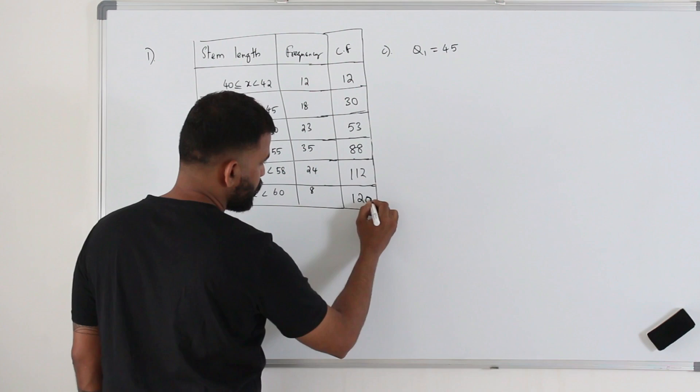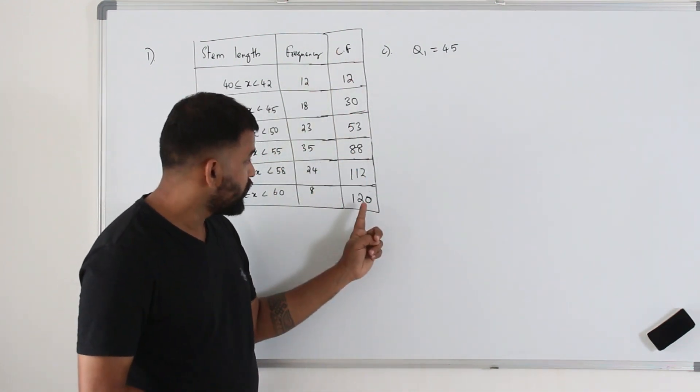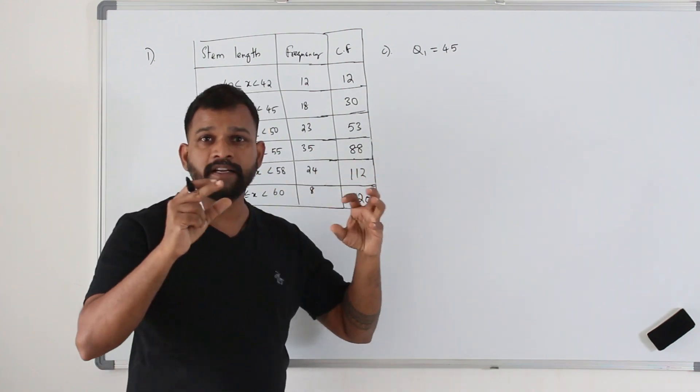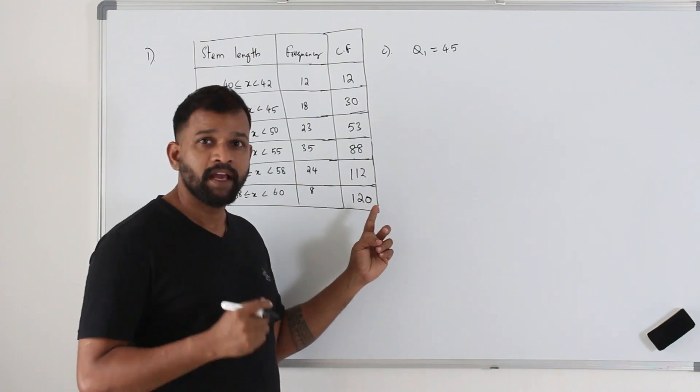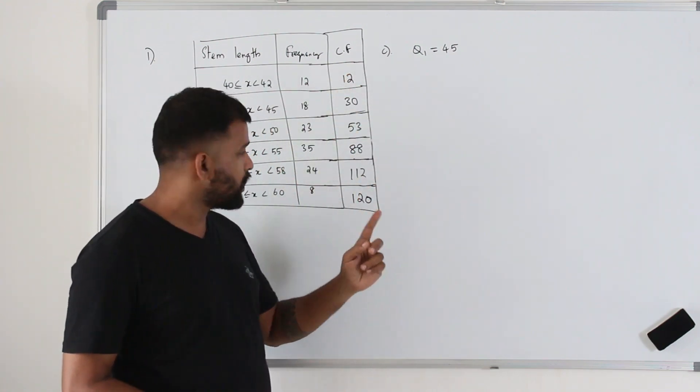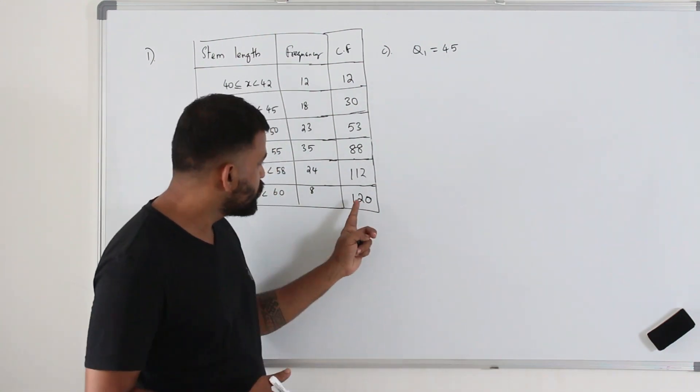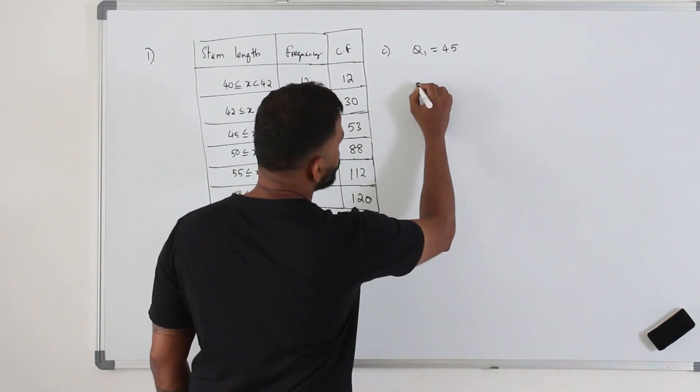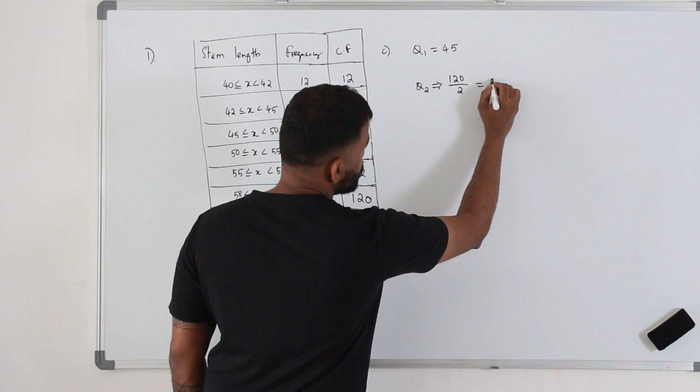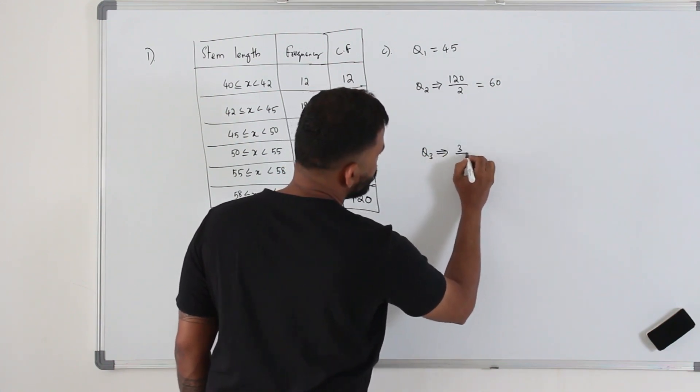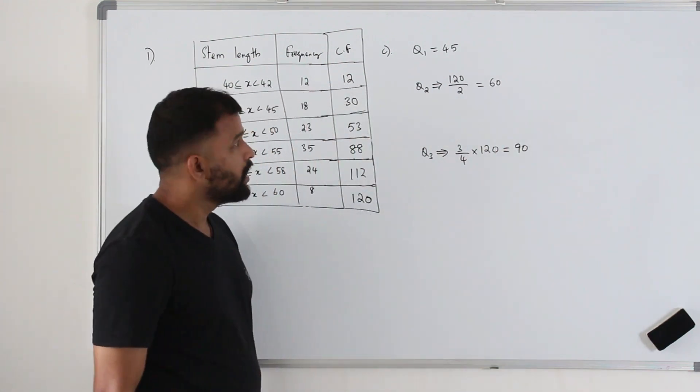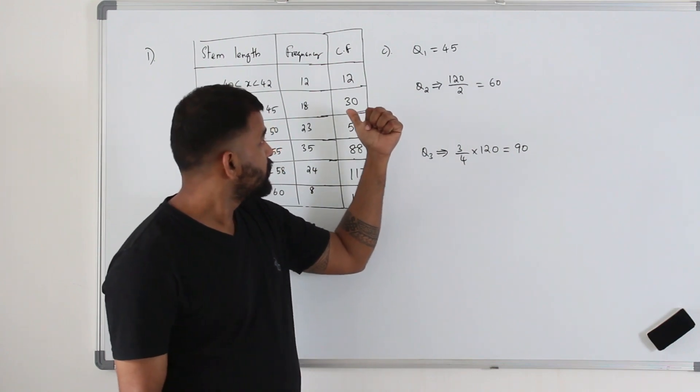Once you got the cumulative frequency, the first thing you need to do, look at the last figure. This should be equal to sigma F, or usually they will mention in the question there are 122 samples tested. So just read the question. If the question says 122, you got 120 here. That means you have made a mistake adding these figures. Just to check. So the question mentioned 122. This should be equal to 122. Now to find Q2, you take sigma F, which is same as the last figure, divide by 2, which is 61. To find Q3 upper quartile, 3/4 of sigma F, which is 91.5 or 92.